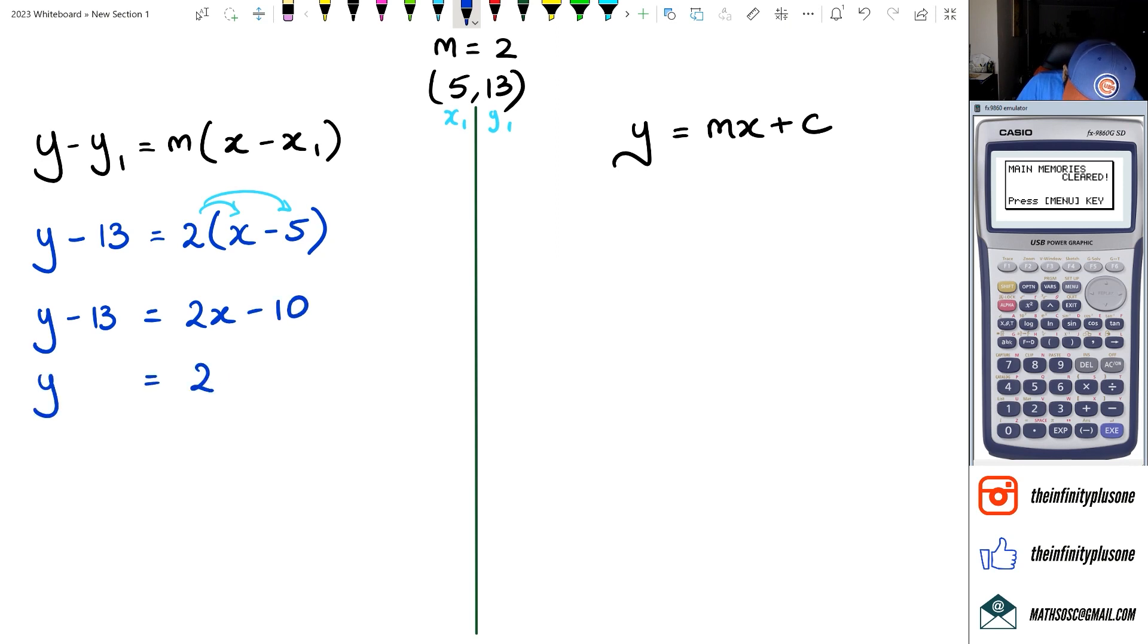Rearranging this, we're going to get y equals 2x minus 10. The 13, when it comes over here to the other side, becomes plus 13, so we're going to get y is equal to 2x plus 3.